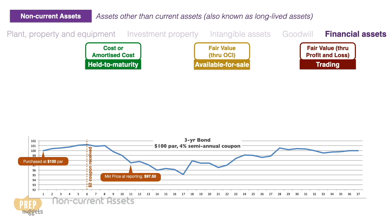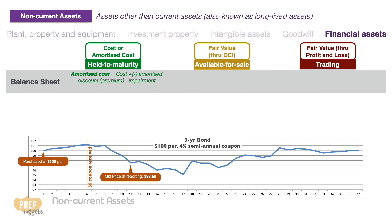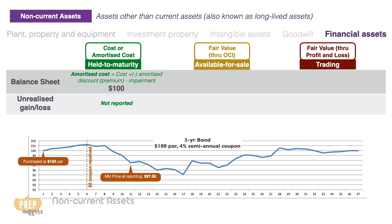Held to maturity securities are recorded in the balance sheet at amortized cost, which equals the original cost plus any amortized discount or minus any amortized premium, minus any impairment losses. Subsequent changes in market value are ignored. Since the bond was bought at $100 PAR with no impairment, it is reported at amortized cost of $100. The market price at reporting is inconsequential, so even though the market value has dropped to $97.50, this unrealized loss is not reported in any statement.